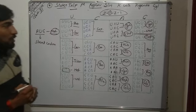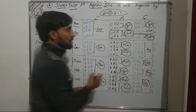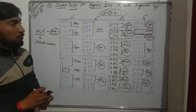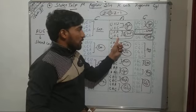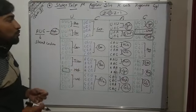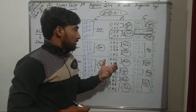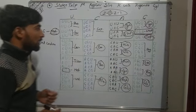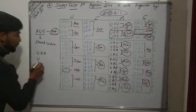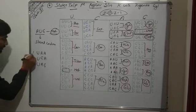Out of these 64 codons, we have 3 codons that do not code for any amino acid: UAA, UAG, and UGA. These are known as stop codons or terminator codons. You may be asked to write down the 3 terminator codons in board exams.